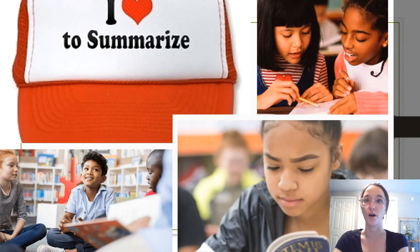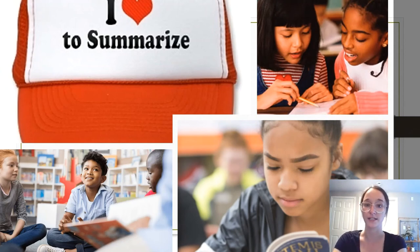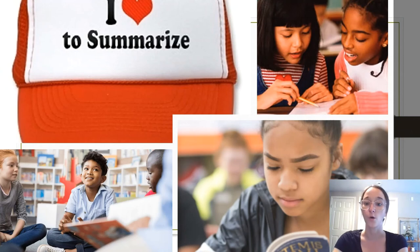Now it's time to move on to your book of choice. As you read the book you choose independently, think about the most important ideas. You will be using these important ideas to orally summarize your reading with your partner. You'll also include an opinion of what you read. Remember, 'oral' means to say out loud, and 'to summarize' means to tell about the most important parts of the story.